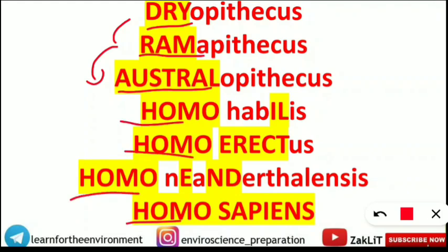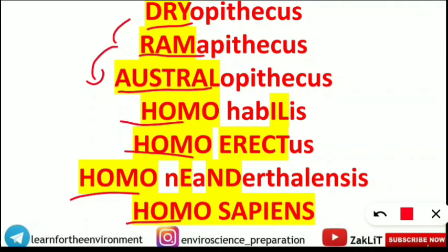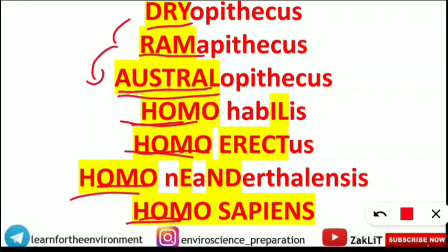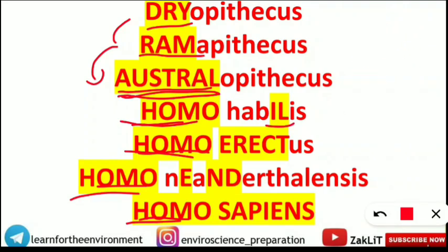After Australopithecus, everything will be Homo. After reaching Australia, that becomes the new home for Sri Ram and his teammates as they prepare to fight the evil spirits — so everything from here is Homo. Next, after reaching Australia, the team members of Sri Ram have fallen ill. They are ill — so Homo habilis is the next evolutionary stage.